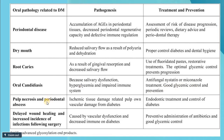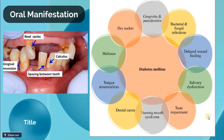Pulp necrosis can occur in diabetic patients due to ischemic tissue damage and vascular damage from diabetes; endodontic treatment and diabetic control are the treatment of choice. Delayed wound healing and increased infection incidence occur following surgery, caused by vascular dysfunction and decreased innate immune response in diabetics. Treatment involves preventive antibiotic administration and good glycemic control.